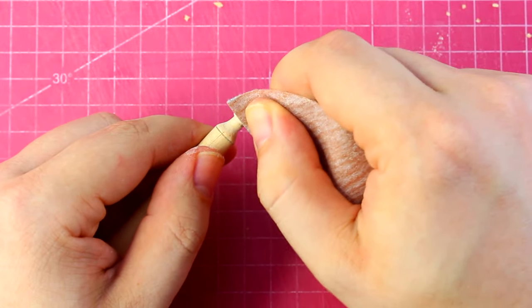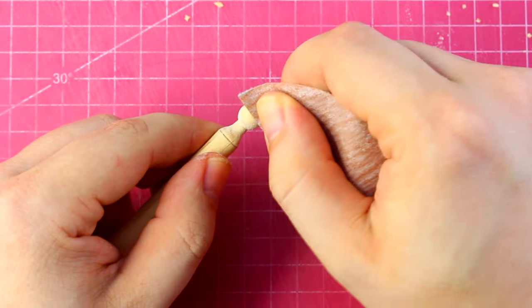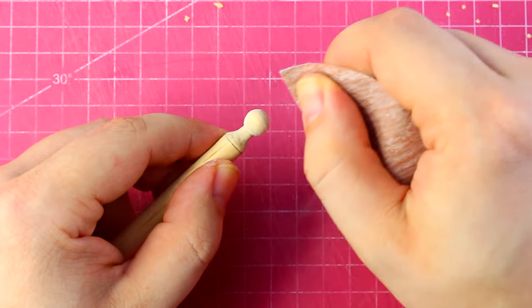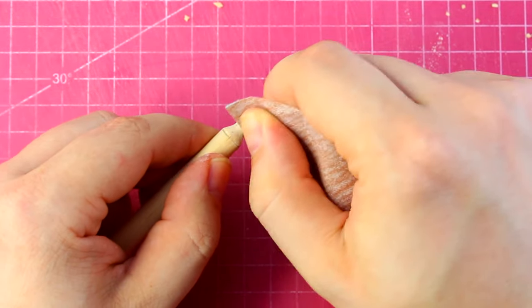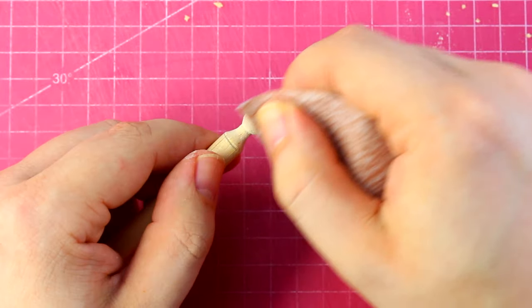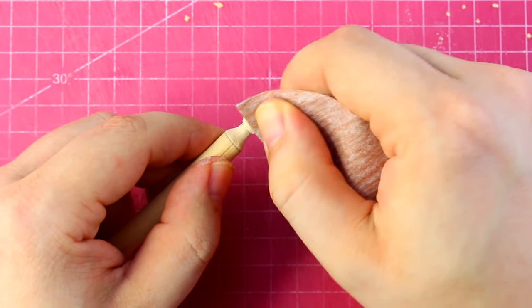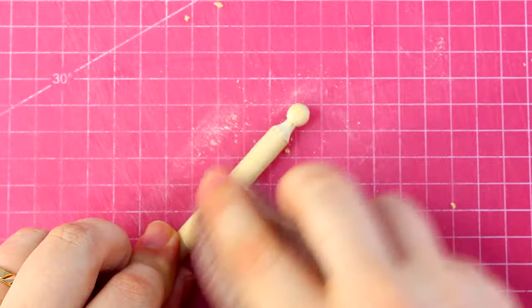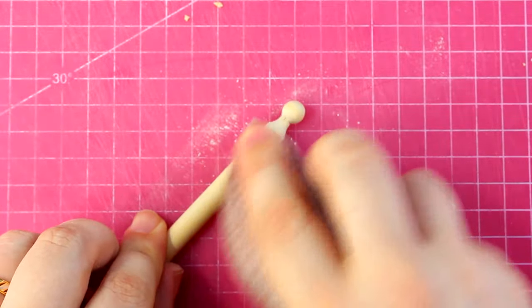The sandpaper I'm using is 320 grit meant for an orbital sander. I like to use this particular sandpaper because the backer makes it a little bit stiff and I can shape it to match the piece that I'm sanding.